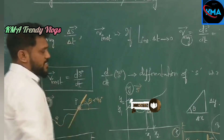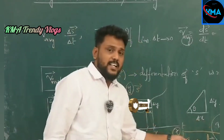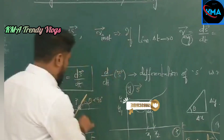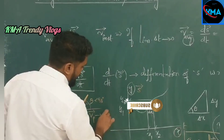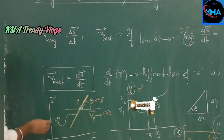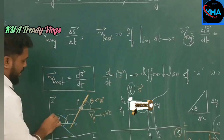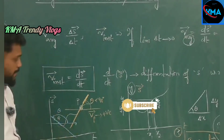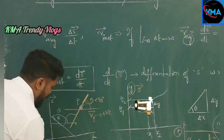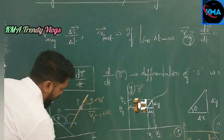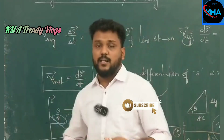The slope at this point is tan theta, because it is an S versus T graph. Since theta is less than 90 degrees, tan theta is always positive — that means the velocity of the particle at point P is positive. At point Q, if I take the tangent, the angle will be more than 90 degrees, and we know tan theta for more than 90 degrees will be negative, so velocity of the particle at Q will be a negative value.